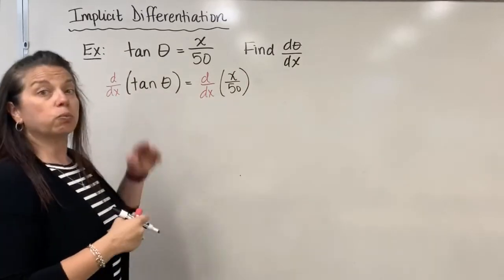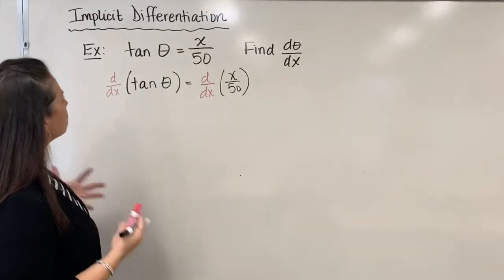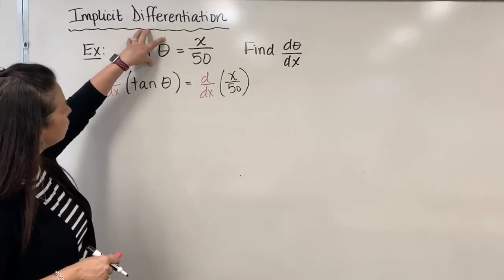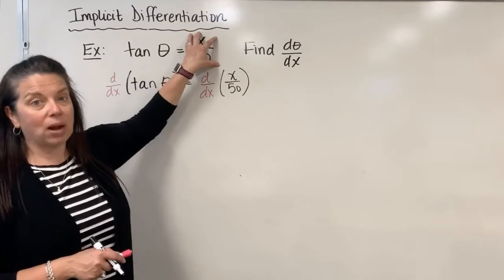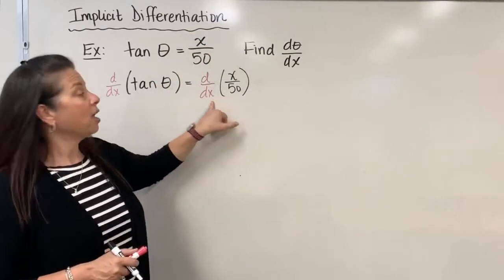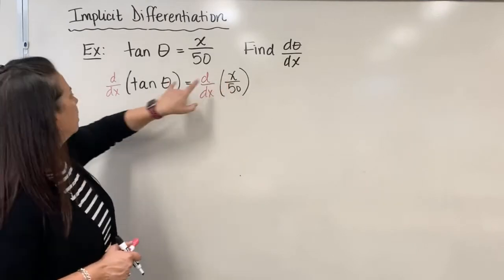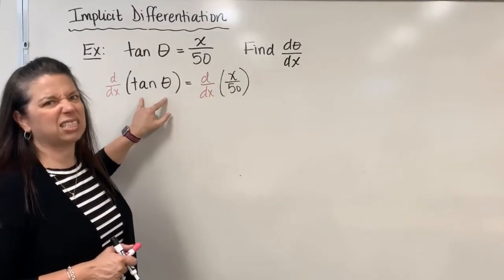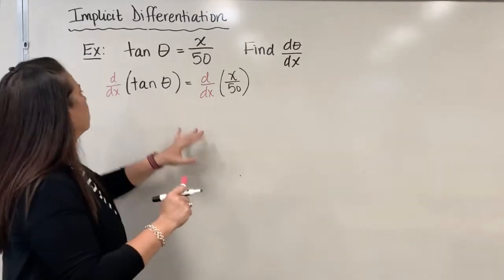I just wanted to write this notation to showcase that in essence what we're doing is taking the derivative of the left side of the equation with respect to x, and we're going to take the derivative of the right side with respect to x. The good news is that side contains an x. The maybe not so great thing is the left side doesn't contain an x. But we can handle it.